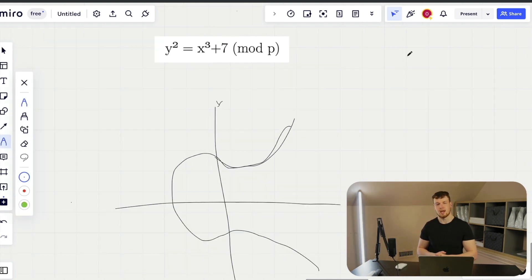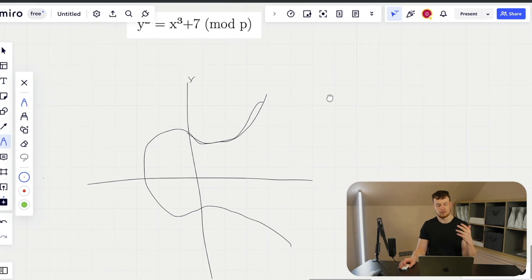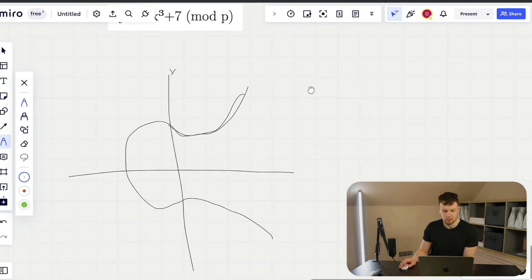And the second thing that you'll notice is that we see a mod p here. So this basically just means that the y squared value that we're operating with here is going to be congruent to some x cubed plus seven, which is a residue modulo p. I'm not going to go too far into the modular arithmetic that's going on here.